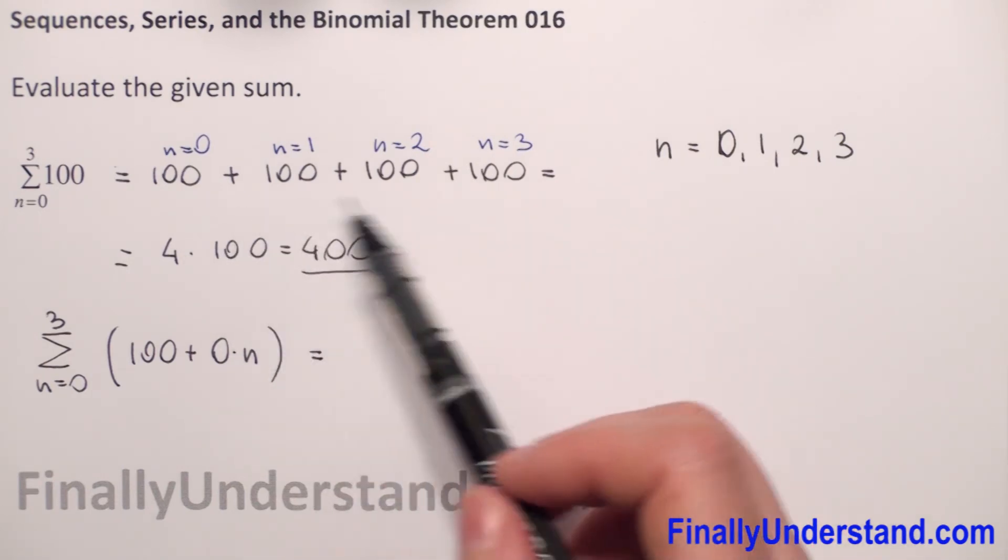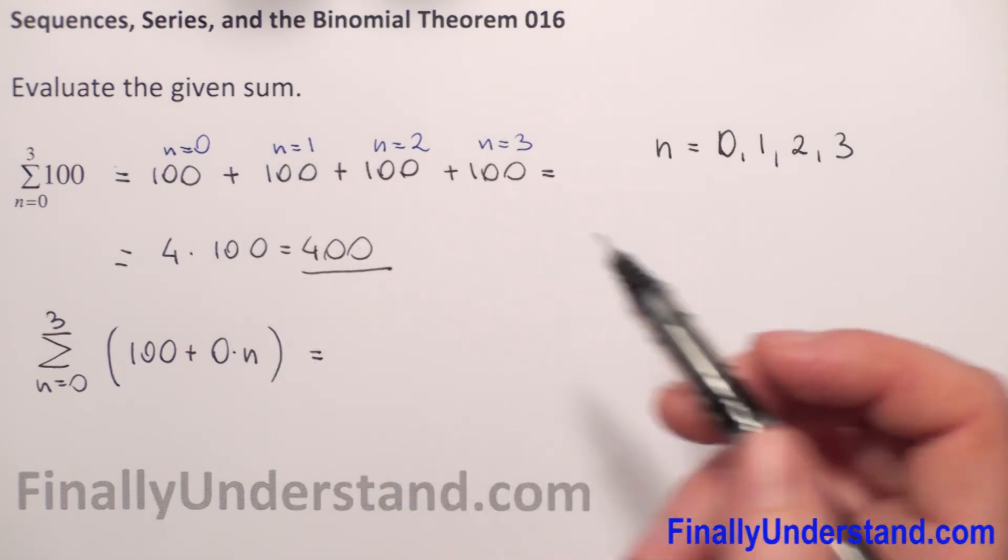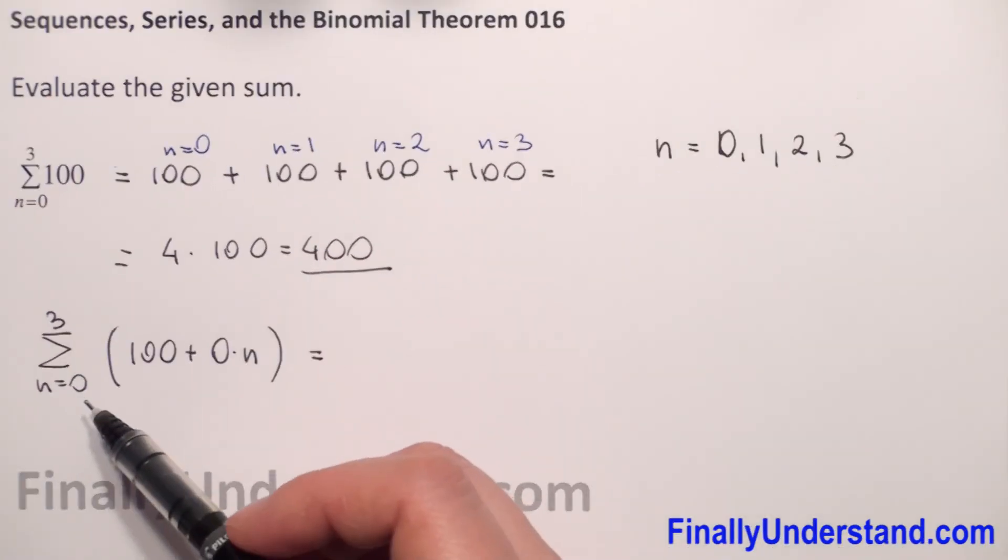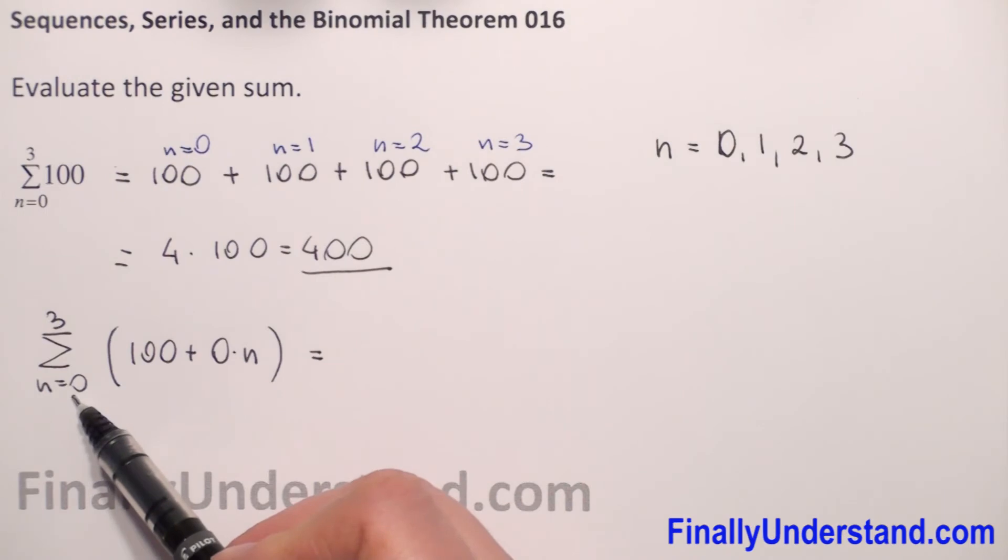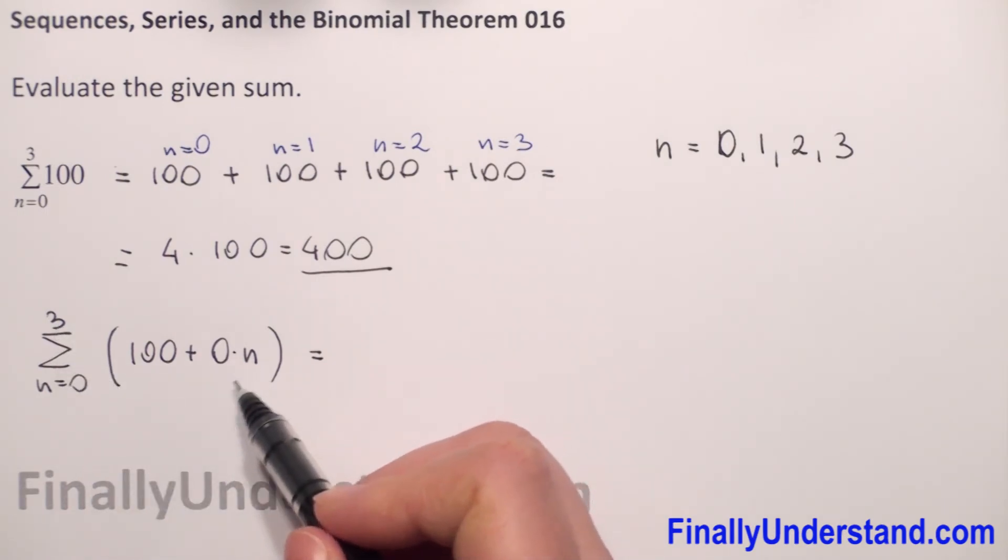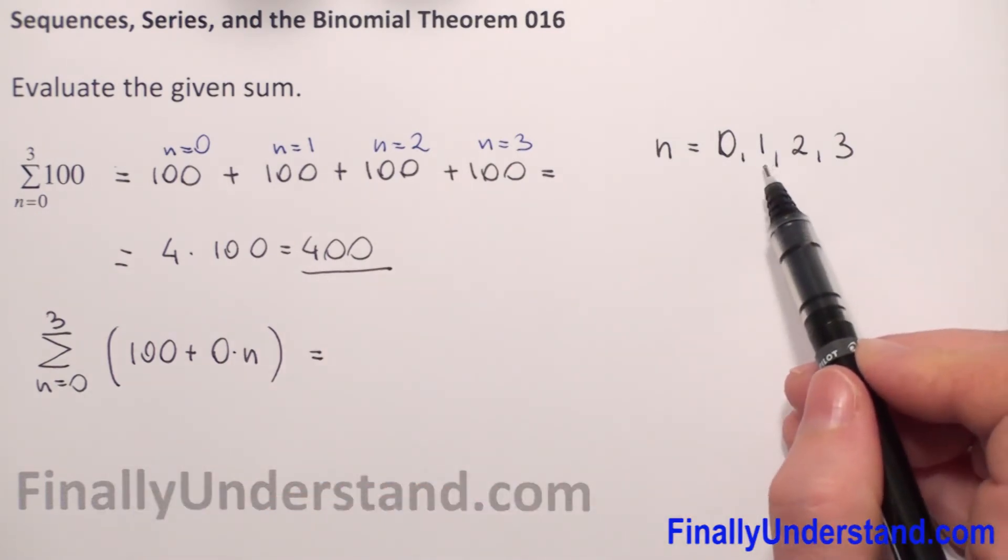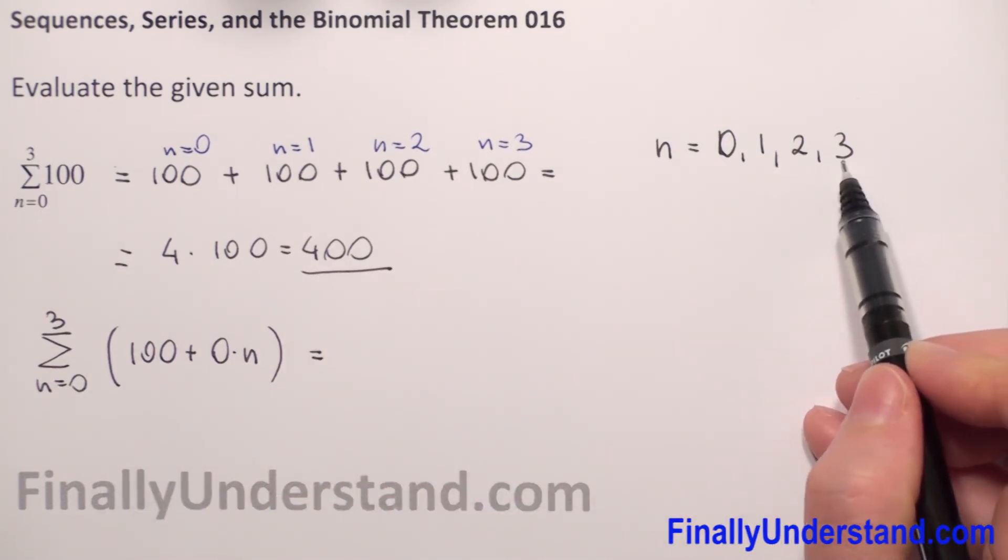So I didn't change our term, but now maybe it will be easier for you to understand why I add 4 times 100. When we have to evaluate the sum of this expression from 0 to n, we need to substitute n first by 0, next by 1, 2, and 3.